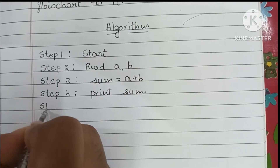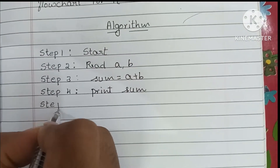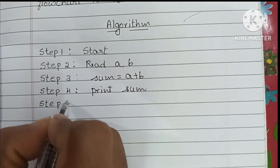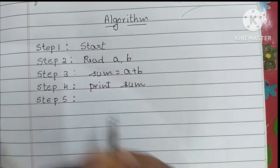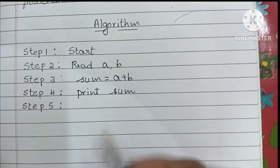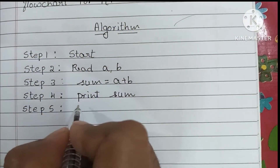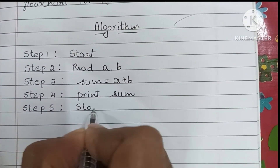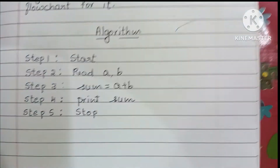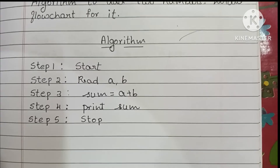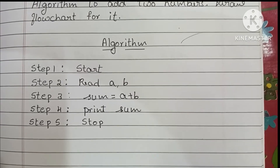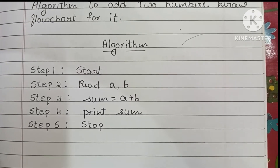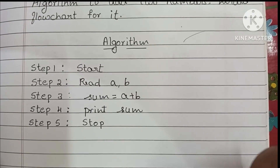In step five, we have to stop the algorithm, so we write the stop statement. This is the algorithm to add two numbers or to find the sum of two numbers.